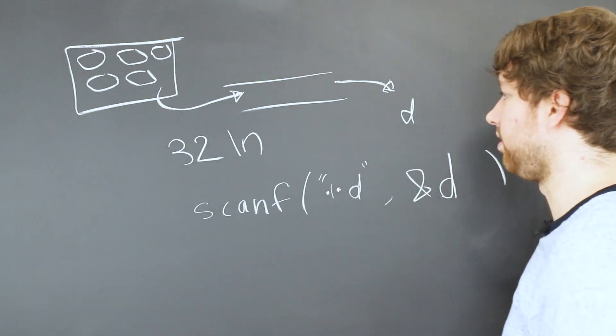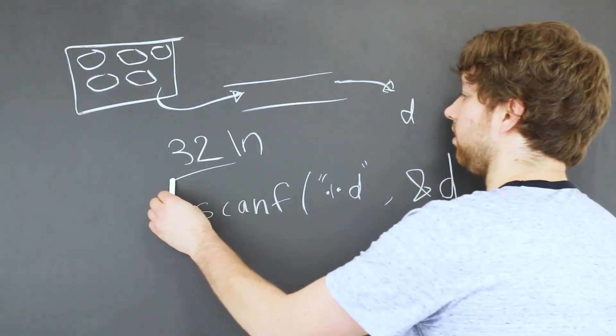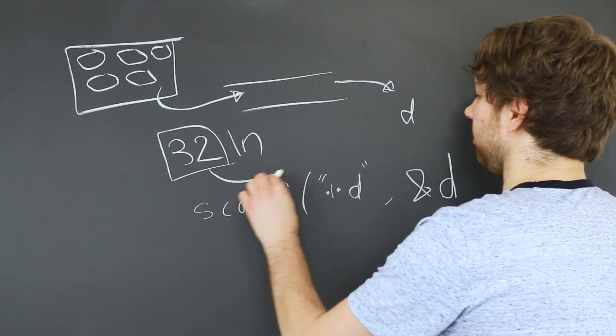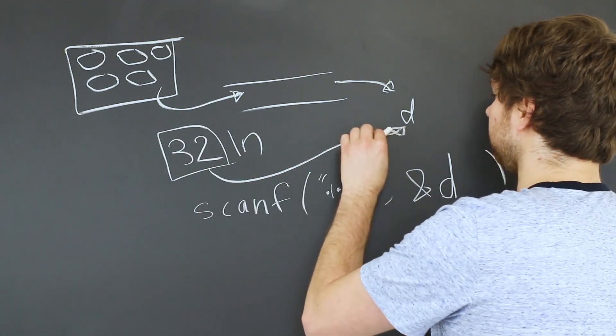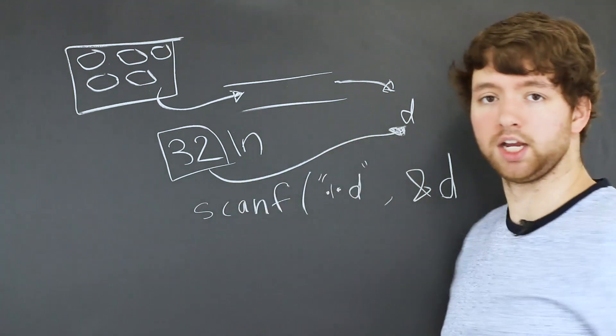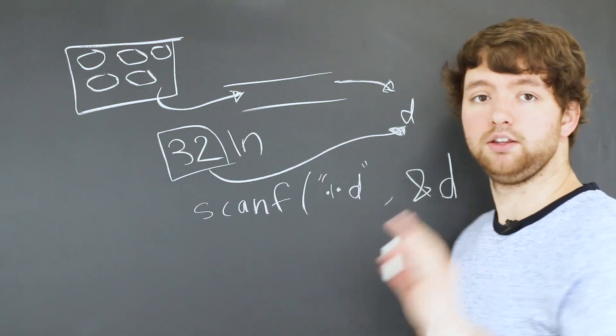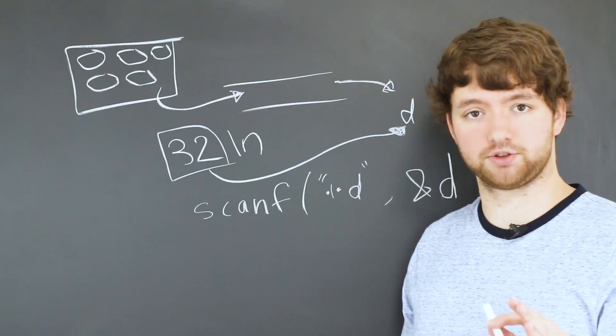Well, what's going to happen is it's going to take this number, assign that to d, and this newline is going to be stuck in the buffer or the input stream.